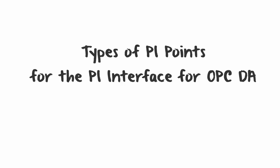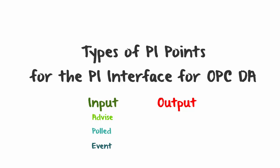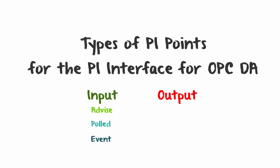There are two main types of PI Points that you can create: Input Points and Output Points. If you're creating an Input Point, there are three different types you can create: Advise, Polled, or Event PI Points. I'm going to start off by explaining the difference between Input and Output Points.